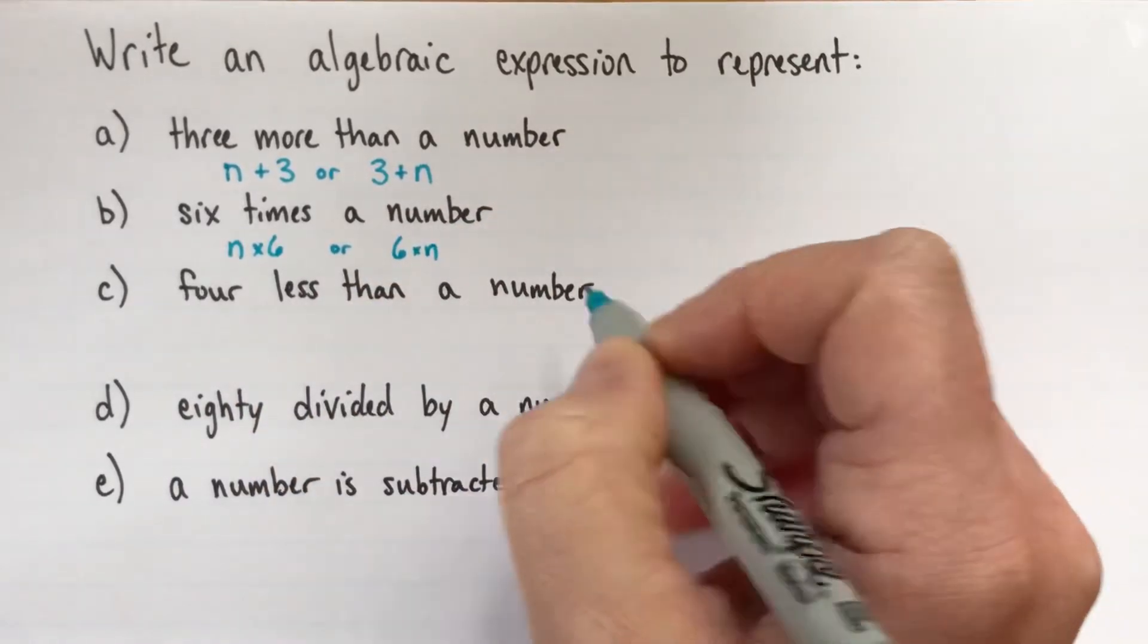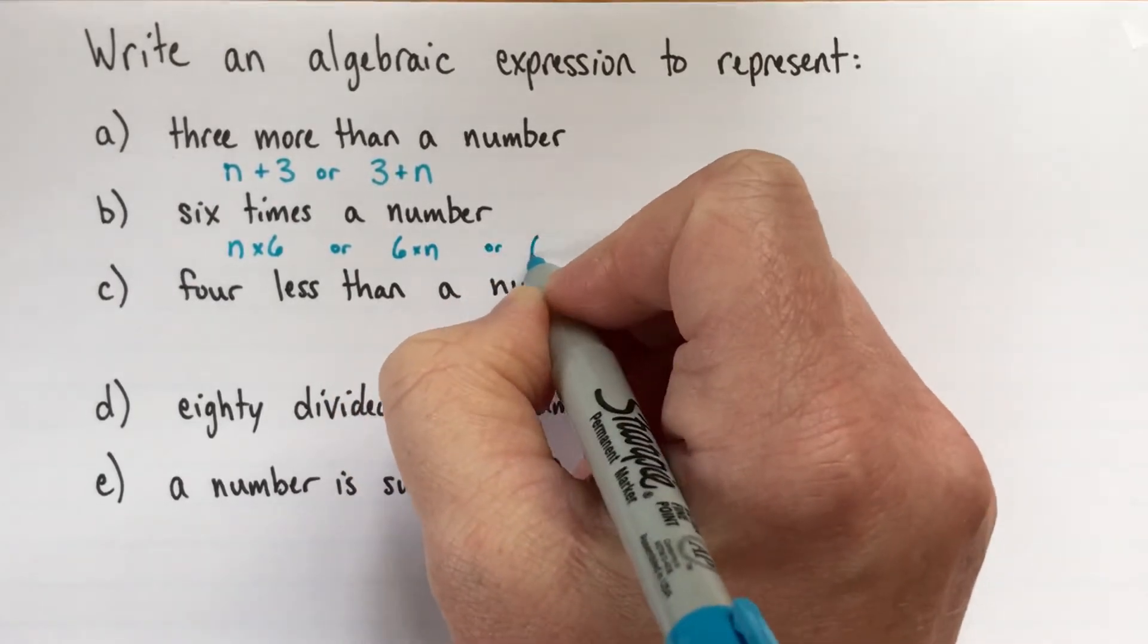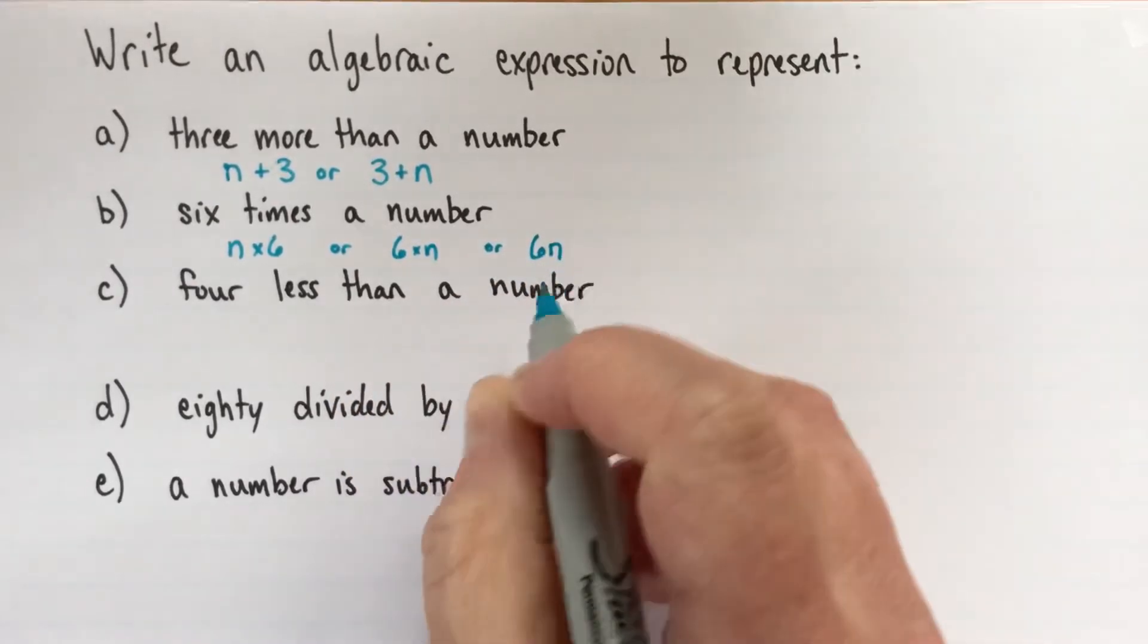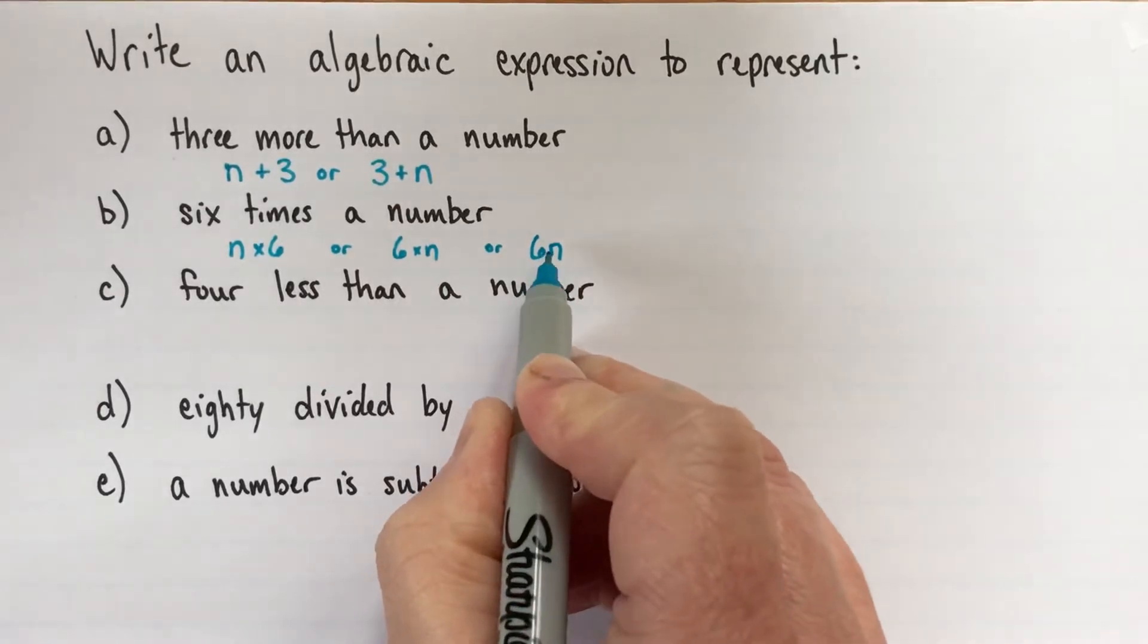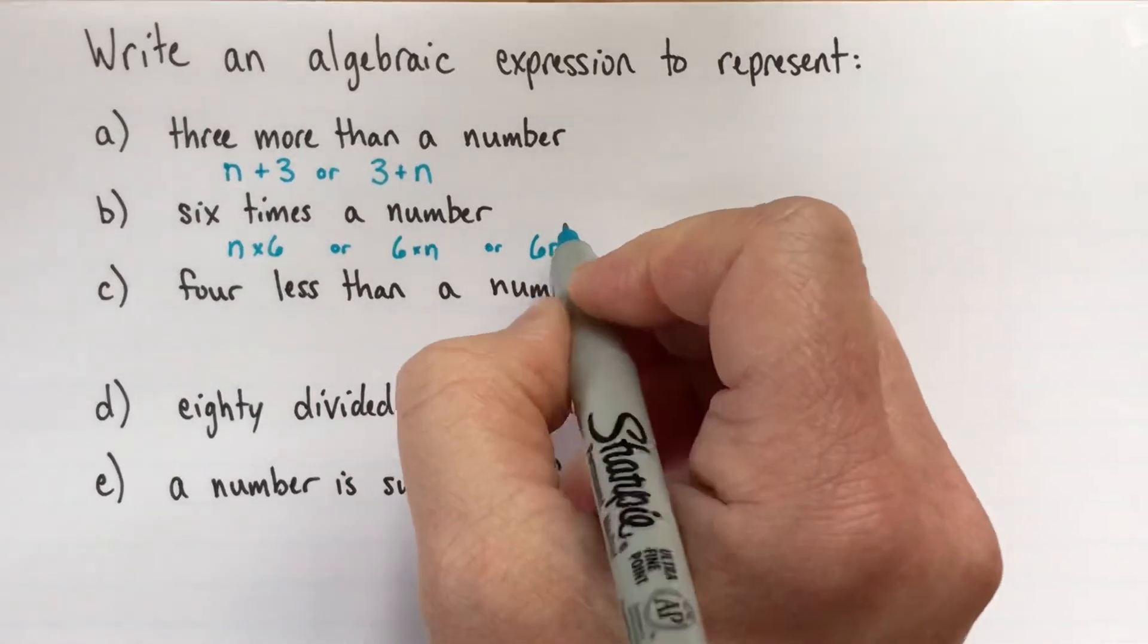Or you could write six times the number. And actually, the best, sort of most professional-looking way is to write 6n like this. When we have multiplication between a number and a variable, we don't need to write the multiplication sign.